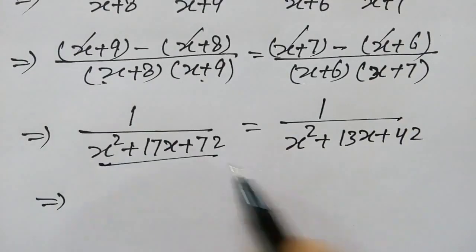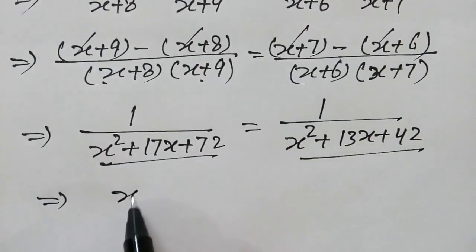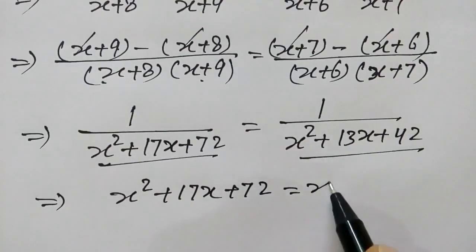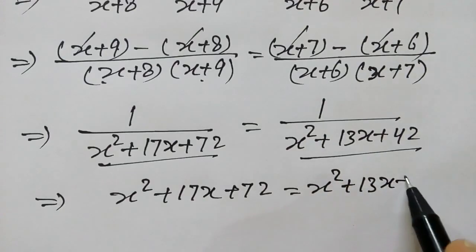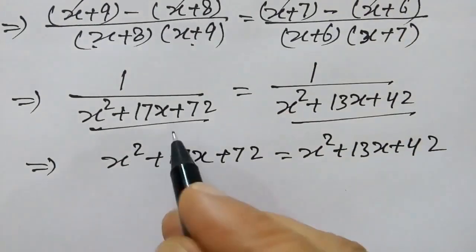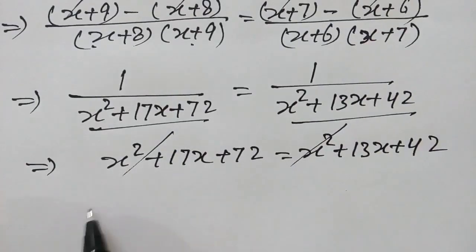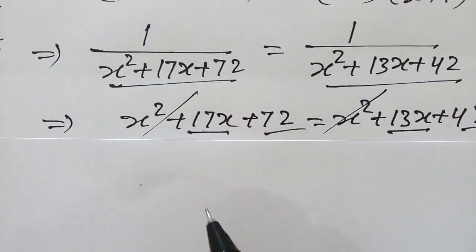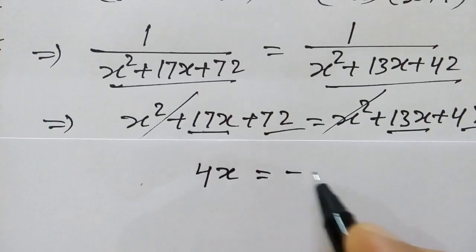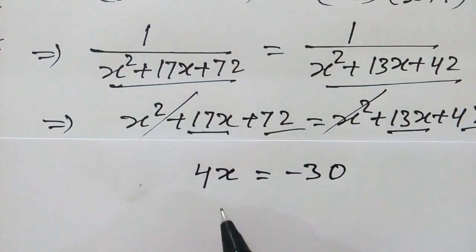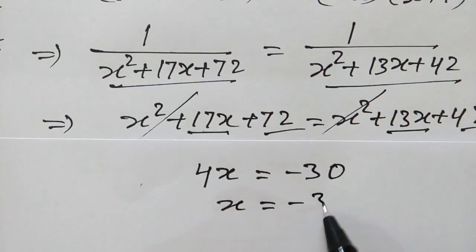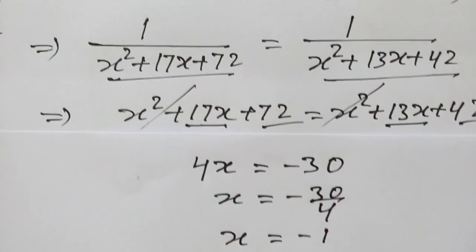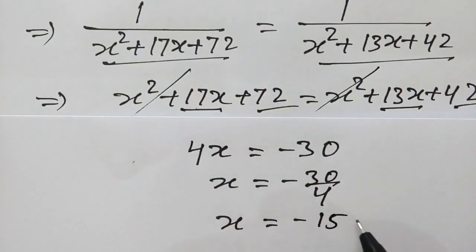Since the numerators are both 1, we can say the denominators are equal: x²+17x+72 is equal to x²+13x+42. The x² terms cancel out, leaving 17x minus 13x equals 42 minus 72, so 4x equals minus 30, giving x equals minus 30 over 4, or x equals minus 15 over 2.